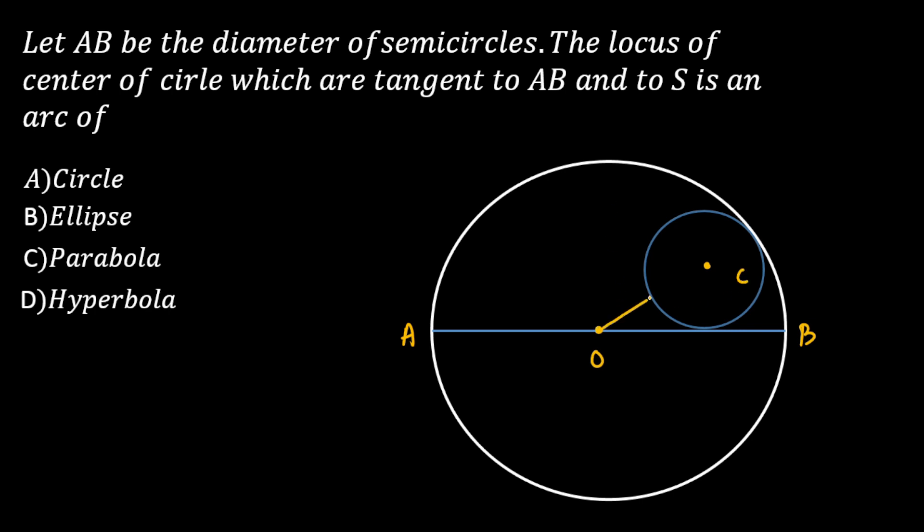If you join the center to the circumference, it equals the radius. Let's say the radius is capital R. The smaller radius is small r. Now I'm going to take a tangent to the semicircle.